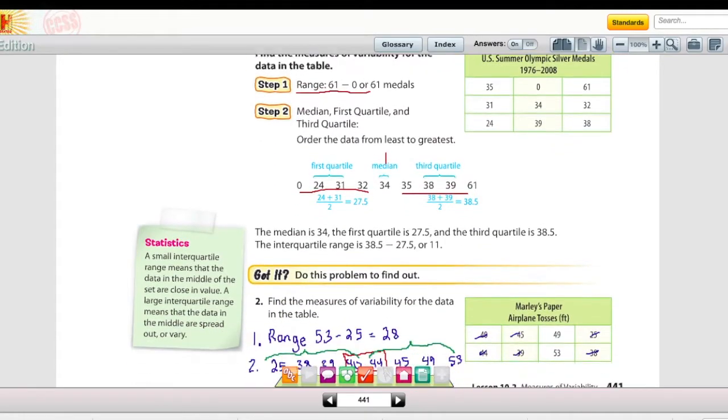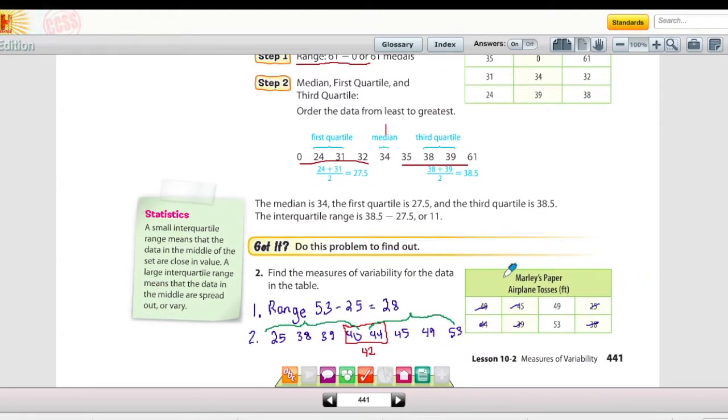So let's scroll down to Example 2. I've already done some of the work for you, but I'd like for you to pause the video and make sure you get this written down in your notes. So when you're finding the measures of variability for the data, the first thing you're going to do is find the range. That's the easy part. The highest number in the data is 53 and the smallest number is 25. 53 minus 25 is 28.